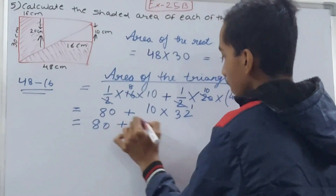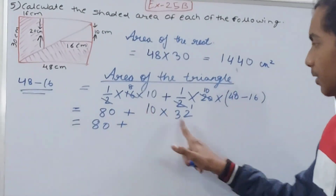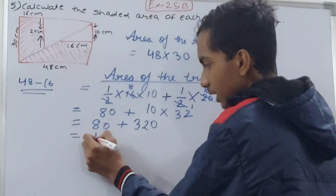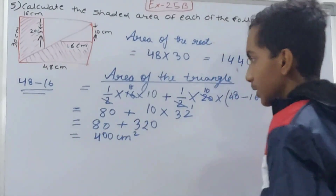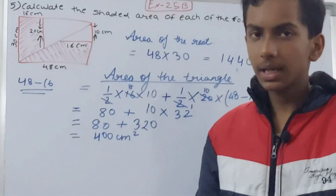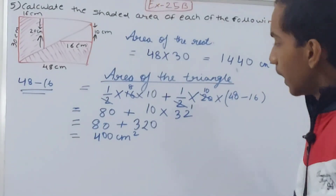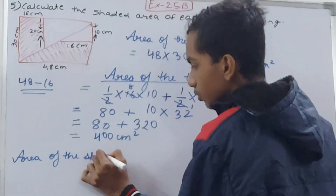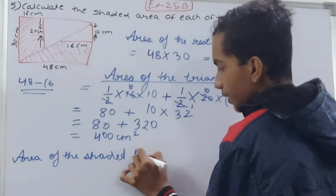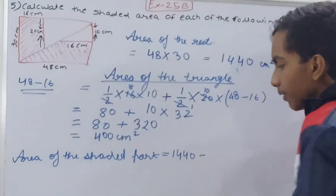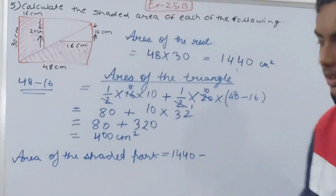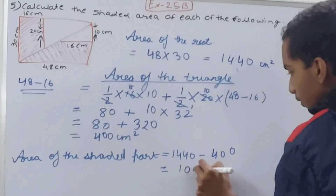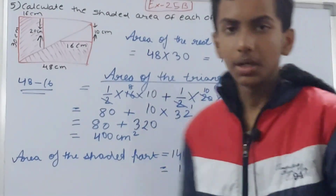So the total area of the two triangles is 80 plus 320 = 400 square centimeters. This is also the area of the unshaded part. The shaded area is the total rectangle area minus the unshaded part: 1440 minus 400 = 1040 square centimeters. That's the answer for the first part.